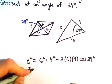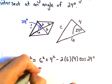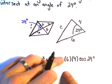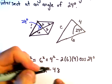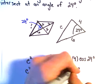And now it's just calculator stuff and some arithmetic. So 6 squared is 36. This will be 16. 36 and 16 would be 52. 6 and 4 are 24. 24 times 2 would give us 48. So we'll have minus 48 times cosine of 24 degrees.